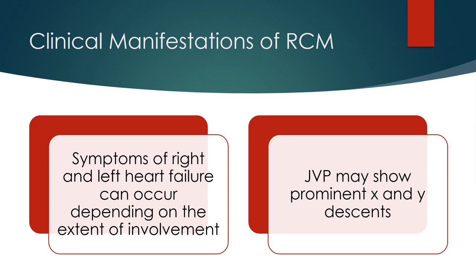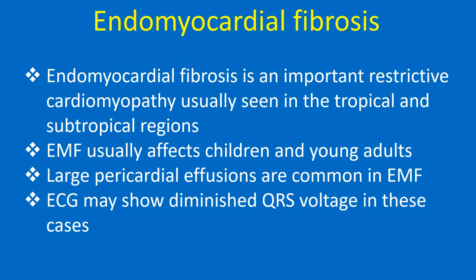JVP may show prominent X and Y descents. Endomyocardial fibrosis is an important restrictive cardiomyopathy usually seen in tropical and subtropical regions. EMF usually affects children and young adults. Large pericardial effusions are common in EMF, and ECG may show diminished QRS voltage in these cases.